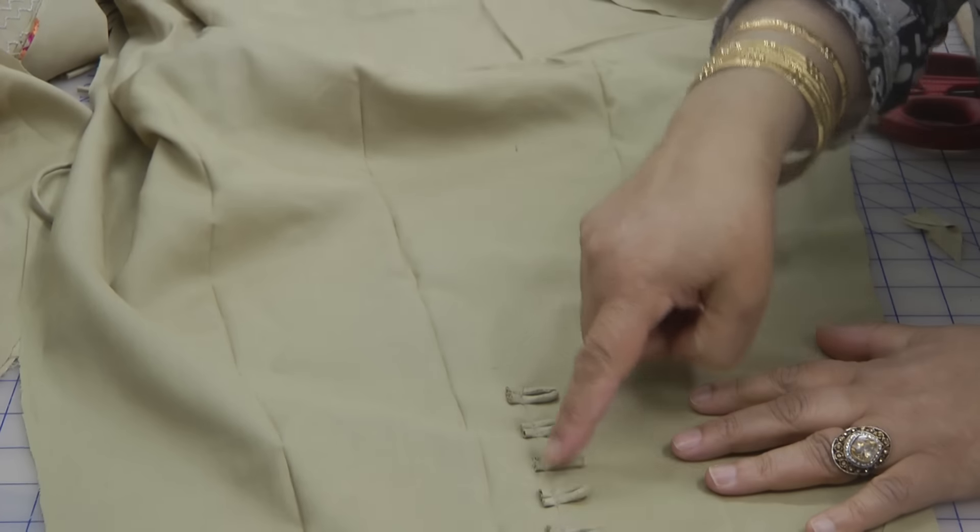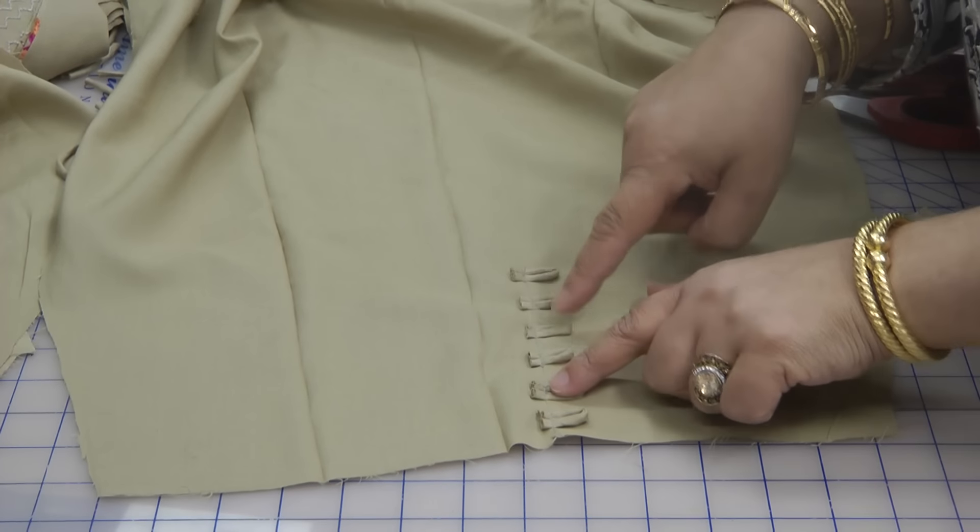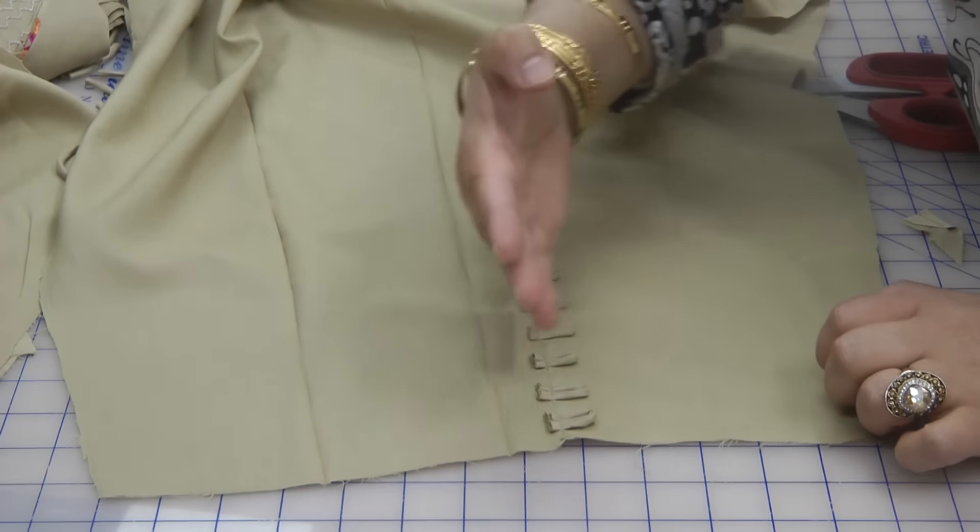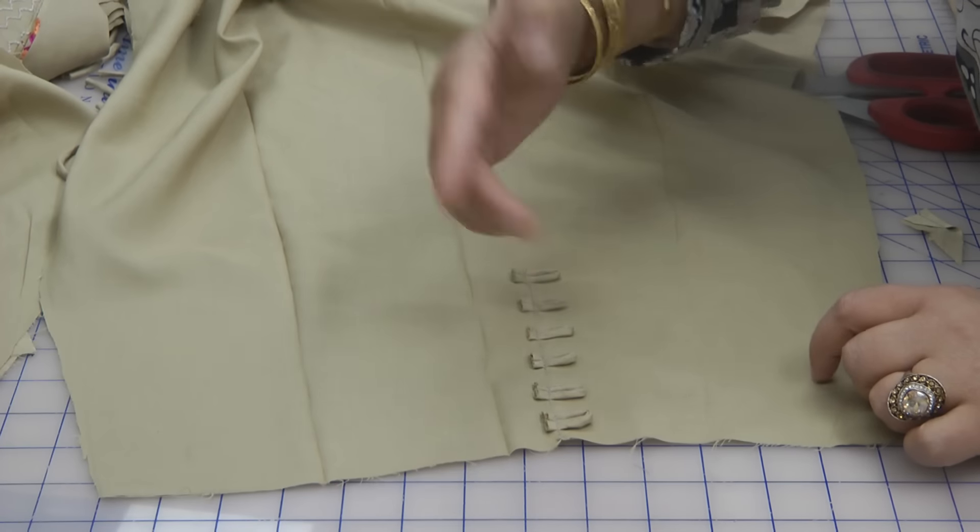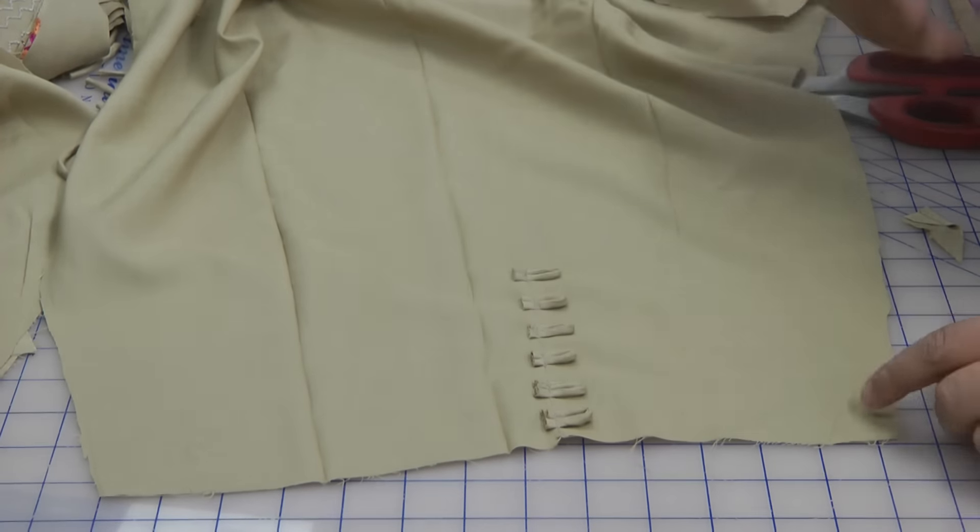Then we attached the loops. At each point of the inch spacing, I've attached the loops facing the side where it's going to get stitched over and turned over, so they're facing the outer side leg seam.